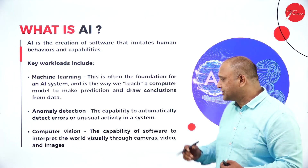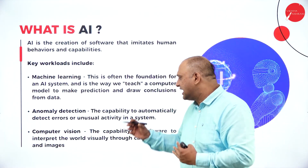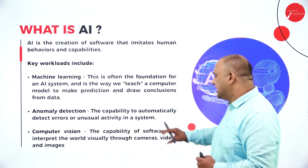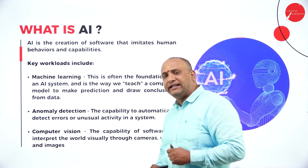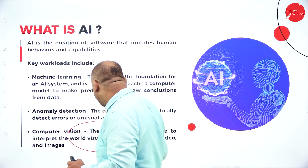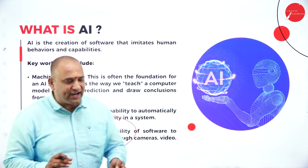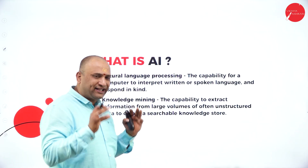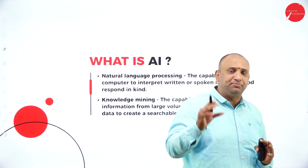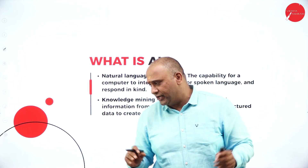The anomaly detection is the capability to detect errors that we're going to see in the system. Then we have computer vision — the capability of software to interpret the visual world through cameras and other detection factors. Now, what is AI? This is the question that has been running across millions of minds in the world.